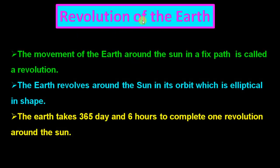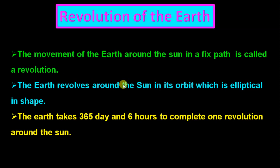Now, revolution of the earth. Another movement of the earth — the movement of the earth around the sun in a fixed path is called revolution. The earth revolves around the sun in its orbit, which is elliptical — meaning oval — in shape.